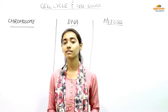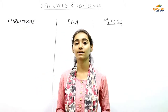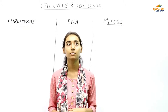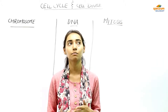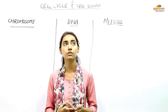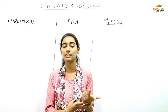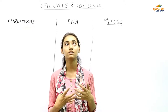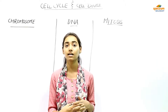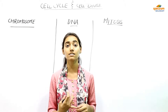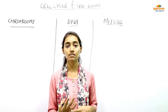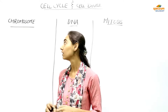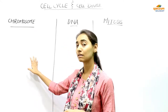Welcome to Spectra Medica. Today we are going to cover the topic of cell cycle and cell division. Before starting, we know that the cell cycle occurs in the body due to growth, repair, replacement, and reproduction. We have to stick to six terminologies: chromosome, genes, haploid, diploid, parent cell, and daughter cell.